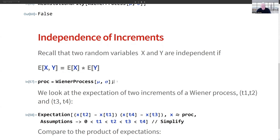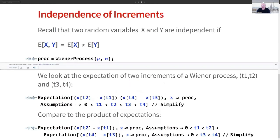We'll set up the process PROC as a Wiener process, parameters mu and sigma. And then we'll look at the expectation of two increments in the process from t1 to t2 and from t3 to t4.